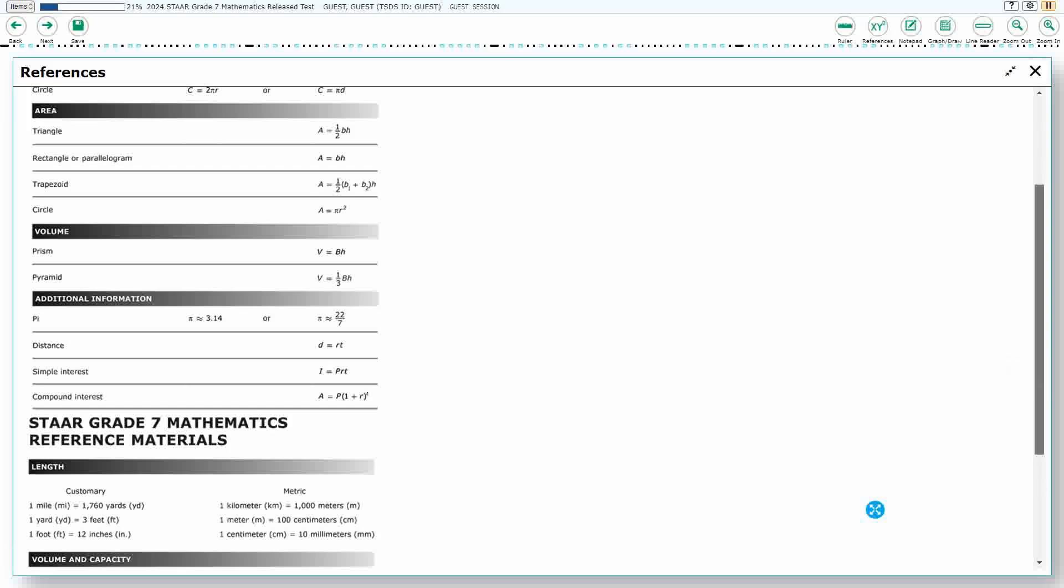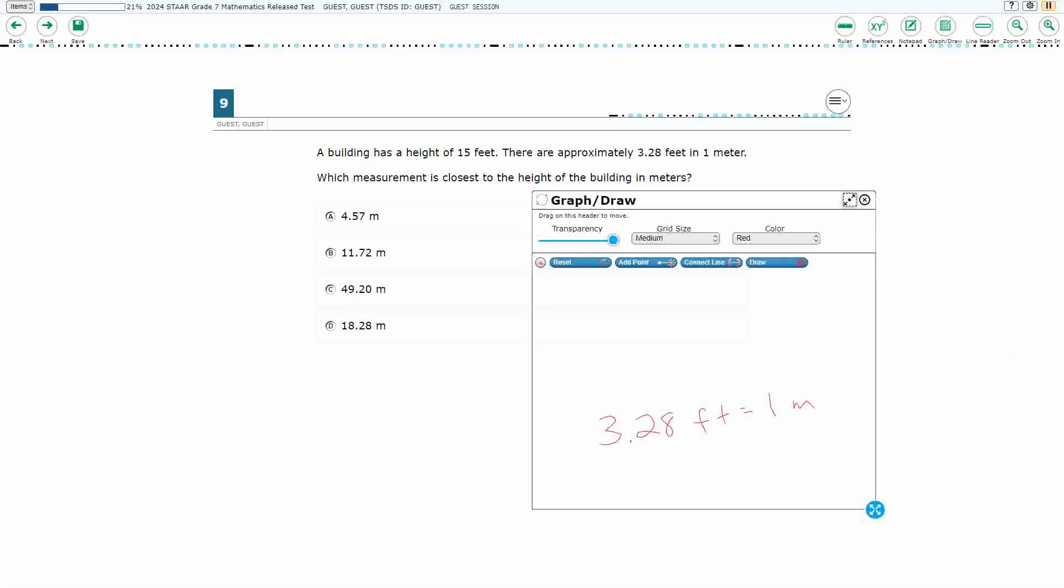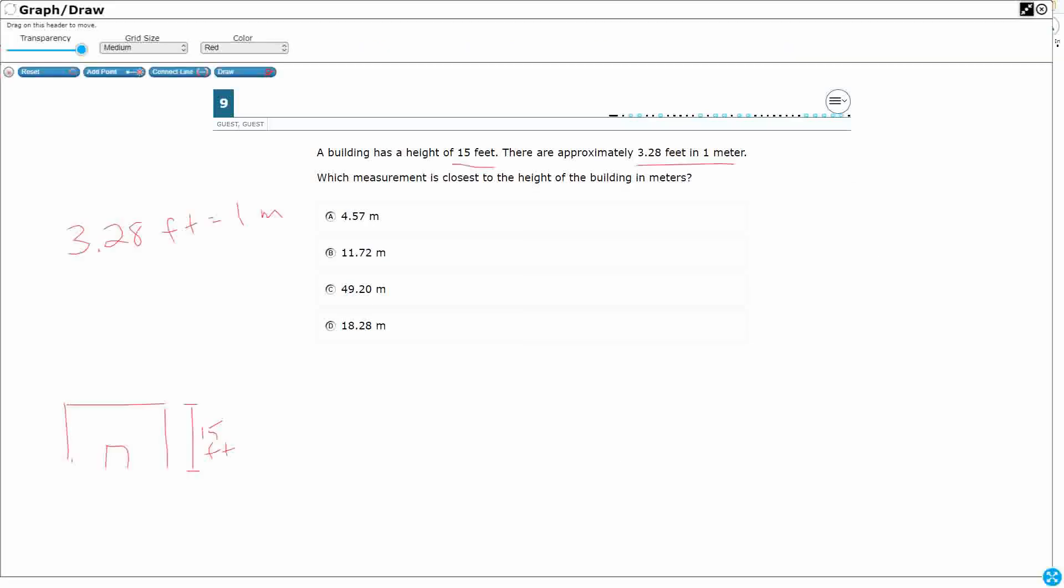So when you're switching between one or the other, right, so this 3.28 feet is going to be our customary, and then the meter is going to be the metric. It's going to be a not-so-pretty conversion. That's why you get 3.28 feet into each meter, and that's even approximate, right? So it's probably, if we were to go to the decimal, it's going to get even more smaller and smaller than that. So how are we going to convert this?